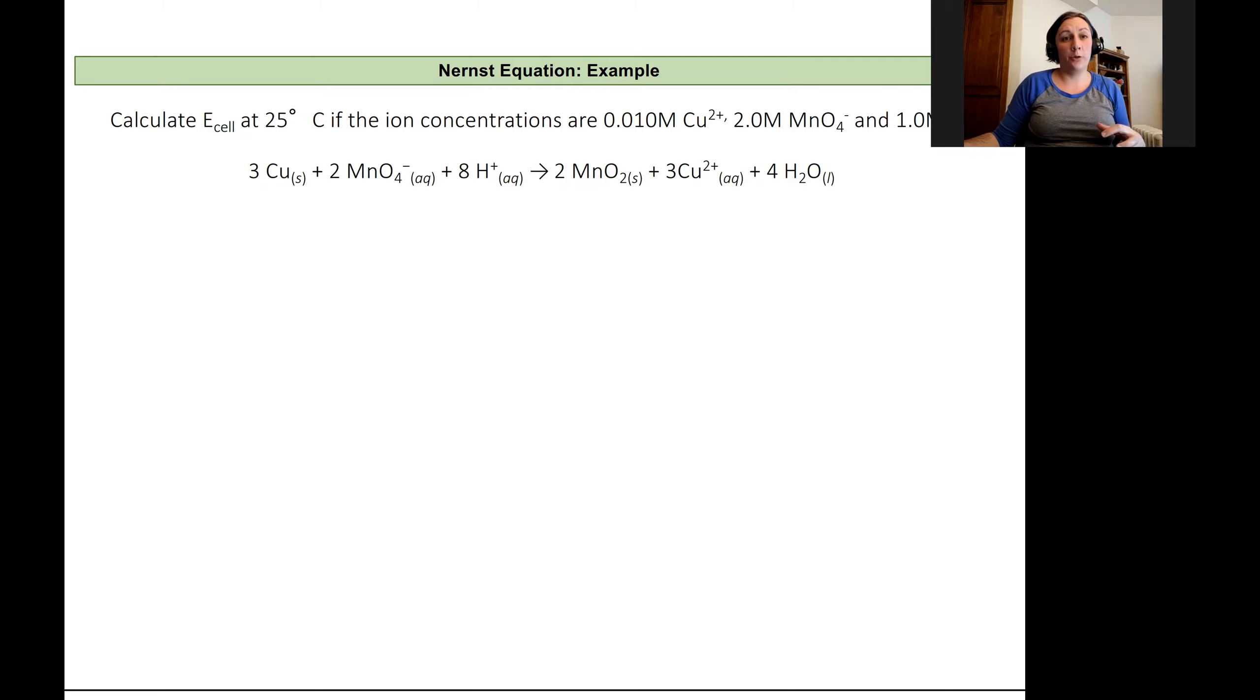In this video, we're going to walk through the solution to an example problem using the Nernst equation. So we have a voltaic cell at room temperature, and we have ion concentrations that are different from one molar. We've got 0.01 molar copper plus two, two molar manganese oxide and one molar hydrogen cation. We're outside of that range of normal conditions, so we can't rely on just the standard cell potential to predict spontaneity for this reaction or predict what that potential would actually be.